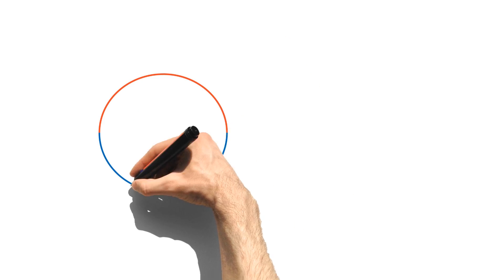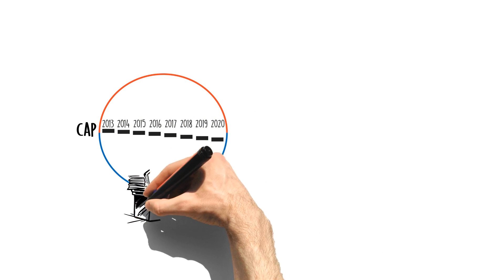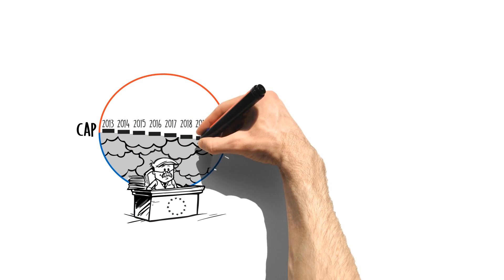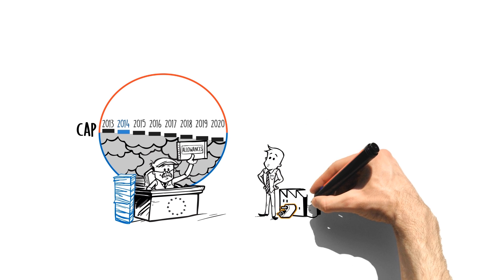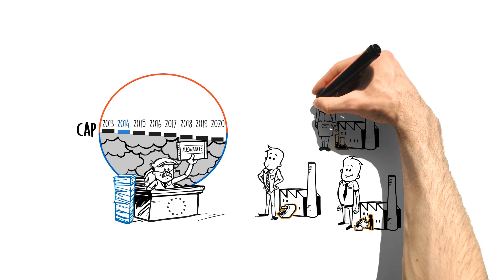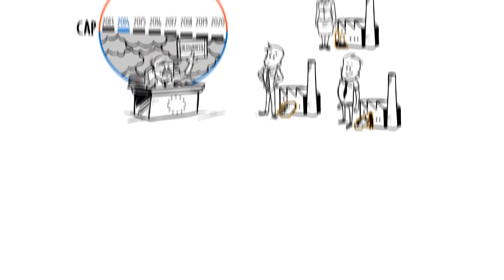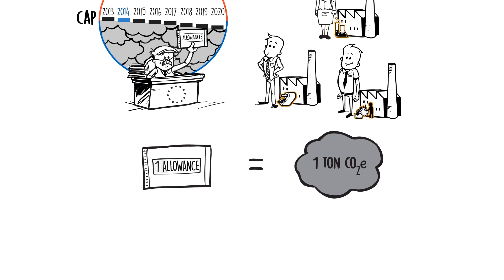First, the European Commission defines an emissions cap for a certain time period. This cap is then divided and shared between the different market players in the form of tradable allowances. Each allowance represents the right for an industrial plant to emit one tonne of CO2 equivalent.